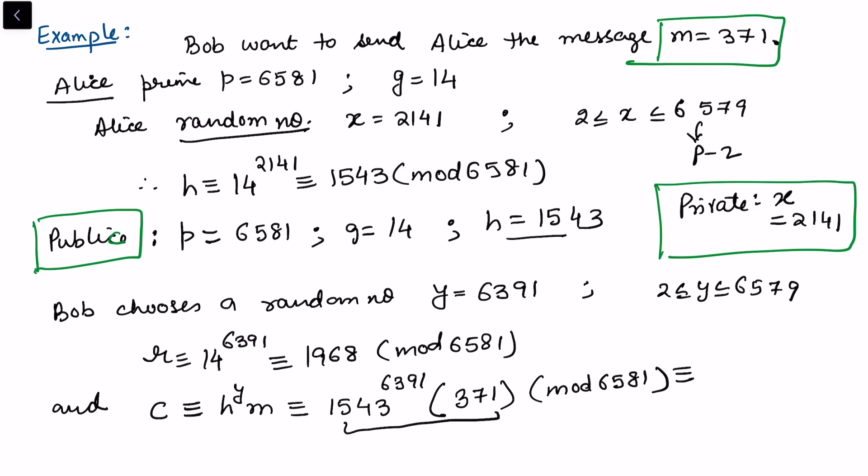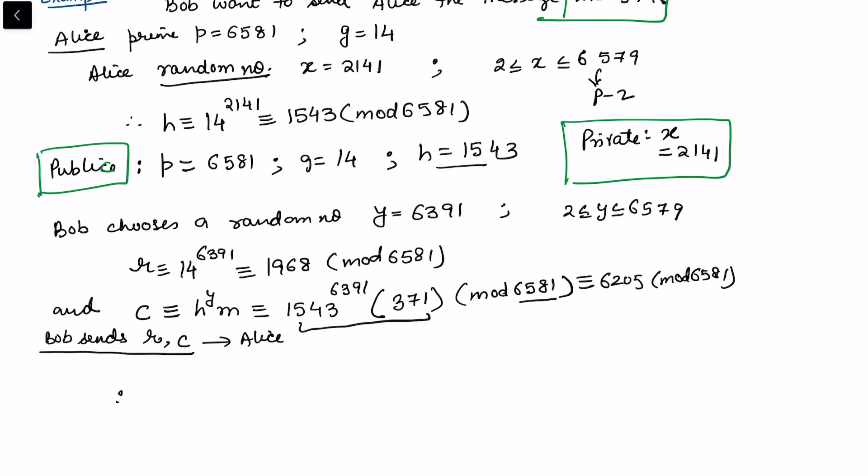Now Bob has to send, so Bob sends r and c. This is the information that is sent by Bob to Alice. So we can see now Alice must need to compute the message.